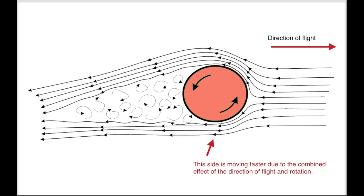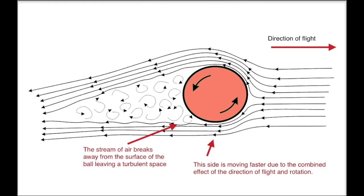The bottom edge of the ball is moving faster through the air because the rotation is towards the direction of the movement. The stream of air then breaks away from this surface, leaving a turbulent space behind the ball.